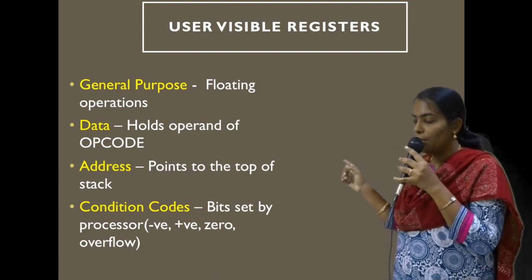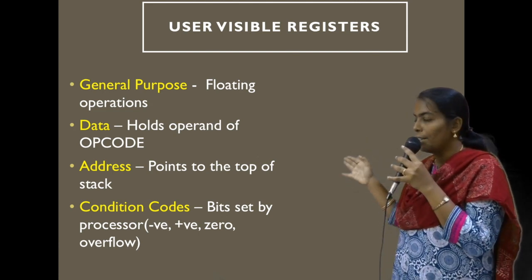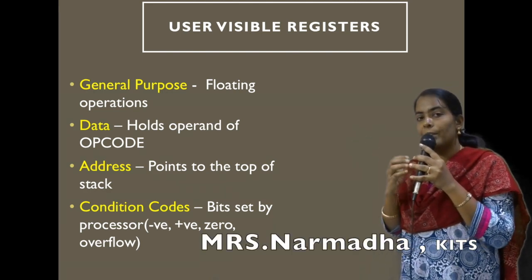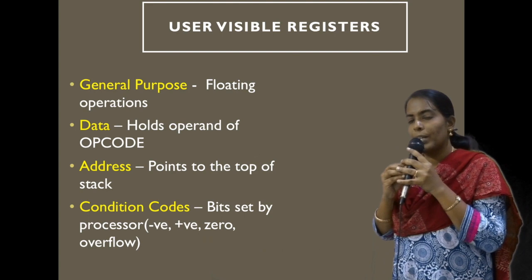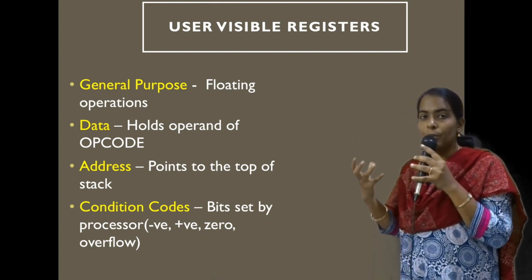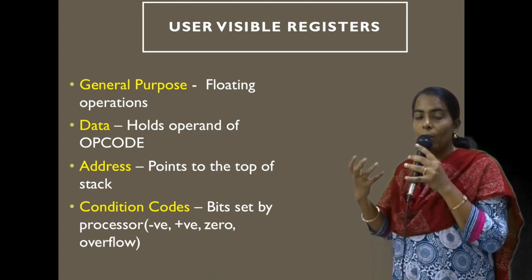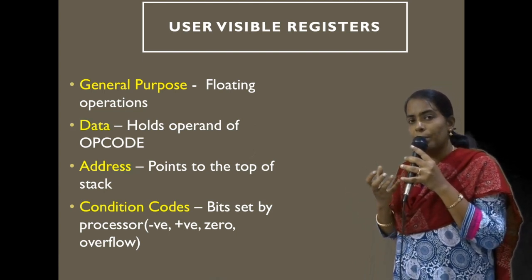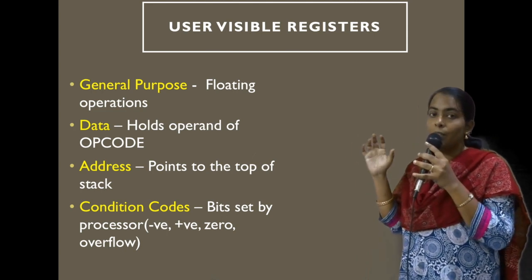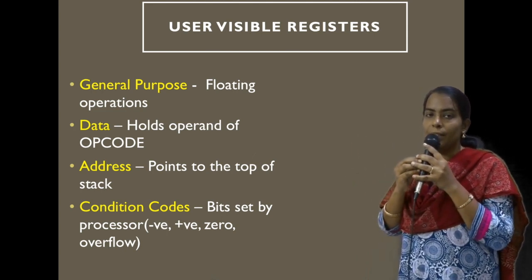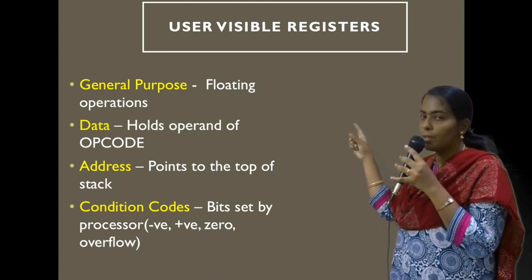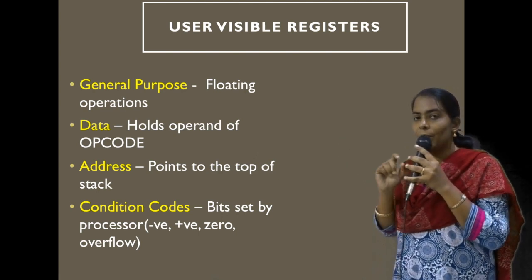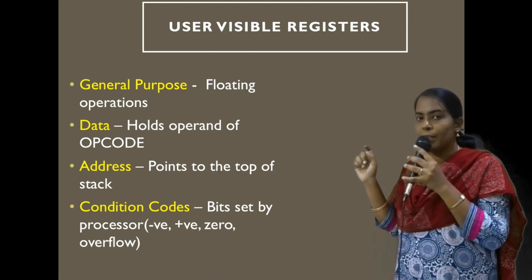Now we will see the different types of user visible registers. The first category is general purpose registers. These are registers used for general purposes — for example, if you would like to store floating point numbers, you can make use of the general purpose register.